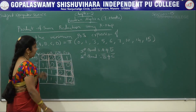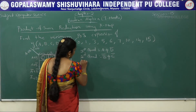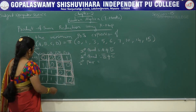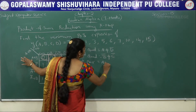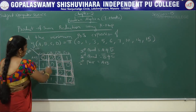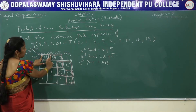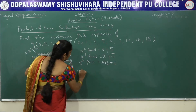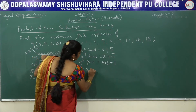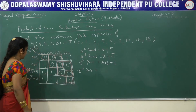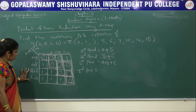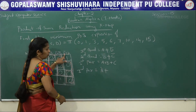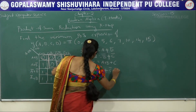Now take the pairs. For the first pair: only one row, so A plus B. Column-wise there are two columns, so the common factor is C only. First pair gives A plus B plus C. For the second pair: A bar is the common row factor, and only one column, so C bar plus D. Second pair gives A bar plus C bar plus D.